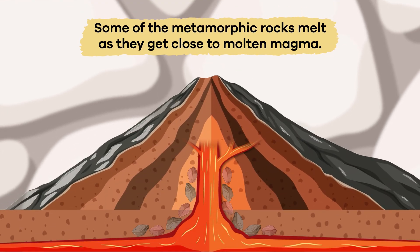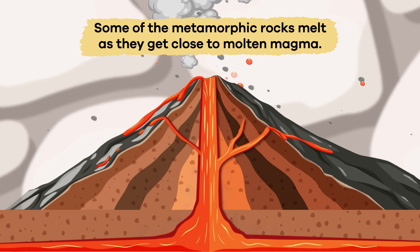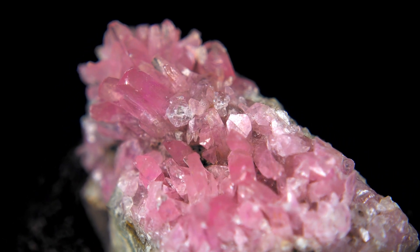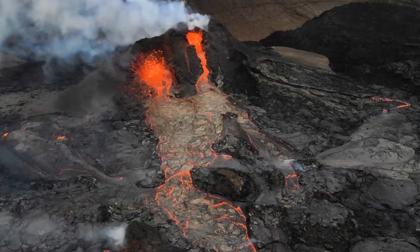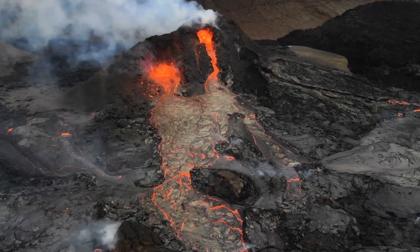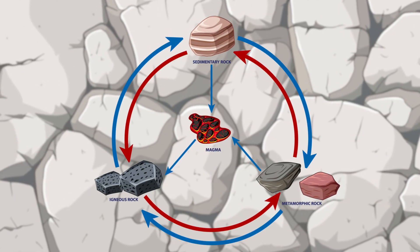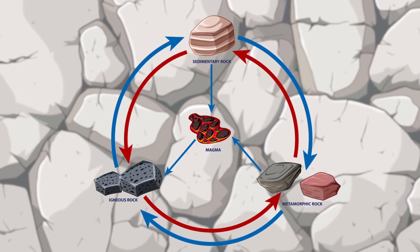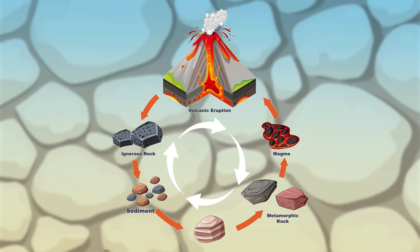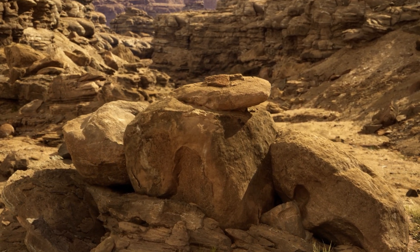Step 6: Some of the metamorphic rocks melt as they get close to molten magma. Some are uplifted to the Earth's surface, and if they melt, they get released again through volcanic activity. Remember that even though these steps are numbered, the cycle occurs simultaneously, with each step taking place at any time over thousands or millions of years.